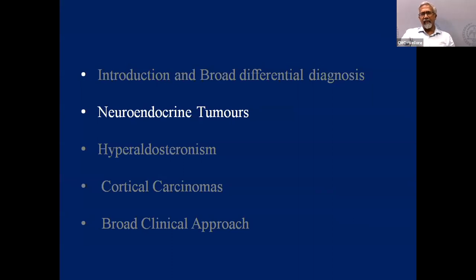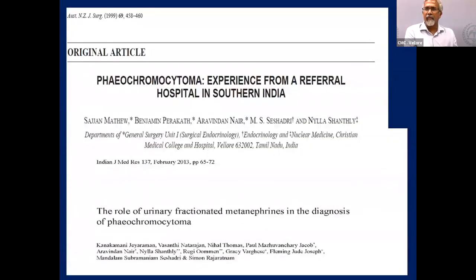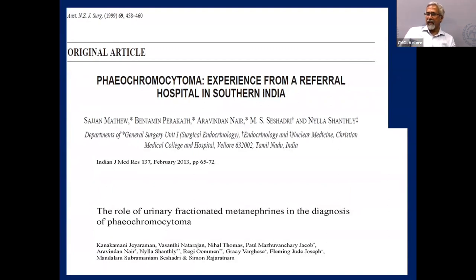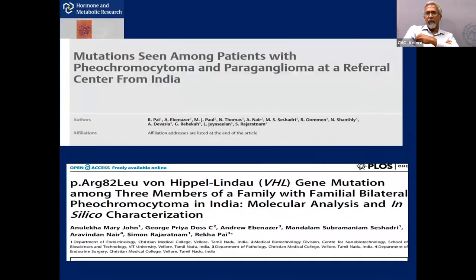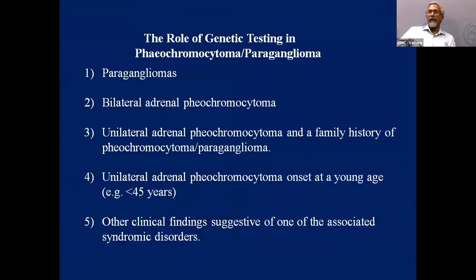I'll focus entirely on the endocrine causes — the three I mentioned at the top — and begin with neuroendocrine tumors in a case-based discussion. The first important work from CMC Vellore was by my teacher, Professor Sheshadri — the first Indian series on pheochromocytoma published in 1998. Subsequently, about a decade ago, we validated our metanephrine studies. My colleague Professor Simon Rajaratnam did wonderful work with Dr. Rekha Pai on mutational analysis in patients with pheochromocytomas.